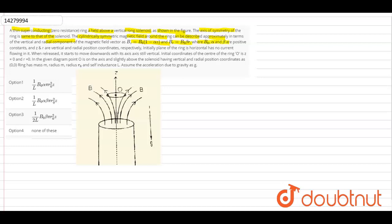As Bz equals B naught times 1 minus alpha z, and Br equals B naught beta into R, where B naught, alpha, beta are positive constants and z and R are the vertical and radial position coordinates respectively. Initially the plane of the ring is horizontal, has no current flowing. When it is released, it starts to move downwards with the axis still vertical.